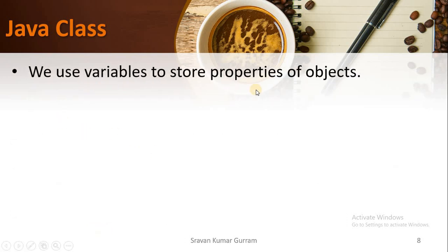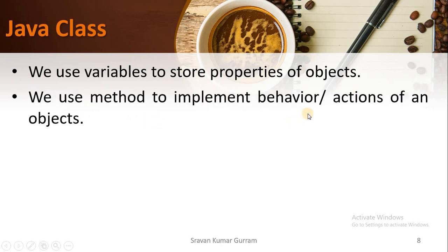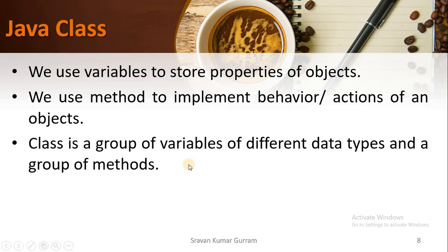We use variables to store the properties of the objects. Every object has some properties and some behaviors. So if you want to store properties like hall ticket number and height, we use variables in the program. If you want to implement the behavior or actions of the objects, we need to implement methods in the program. A class is a group of variables of different data types and a group of methods.